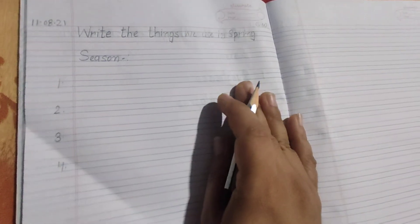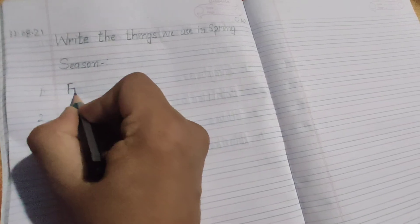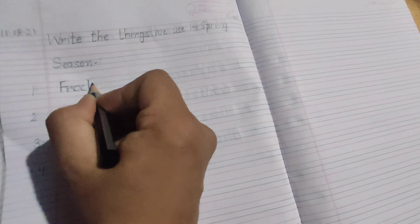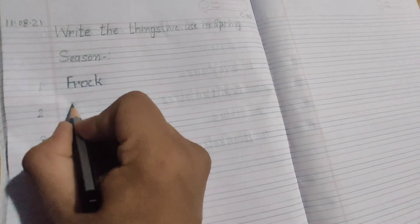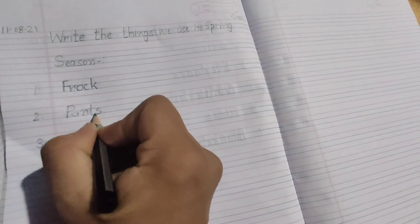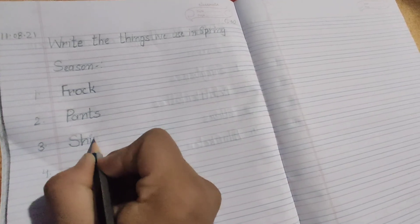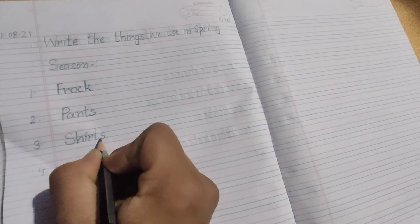So there are so many things which we use in spring season. We wear, the girls used to wear frock. F-R-O-C-K frock. The next, boys wear pants. P-A-N-T-S pants. And they also used to wear shirts. Shirts. S-H-I-R-T-S. Shirts.